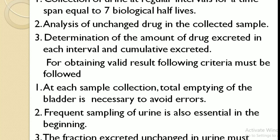This method involves collection of urine at regular intervals for a time span equal to 7 biological half-lives — compared to plasma samples which are collected up to 3 biological half-lives. It also requires analysis of unchanged drug in the collected samples and determination of the amount of drug excreted in each interval and cumulatively. For obtaining valid results, the following criteria must be followed: complete emptying of the bladder at each sample collection is necessary to avoid errors, frequent sampling is essential in the beginning, and the fraction excreted unchanged in the urine must remain constant.